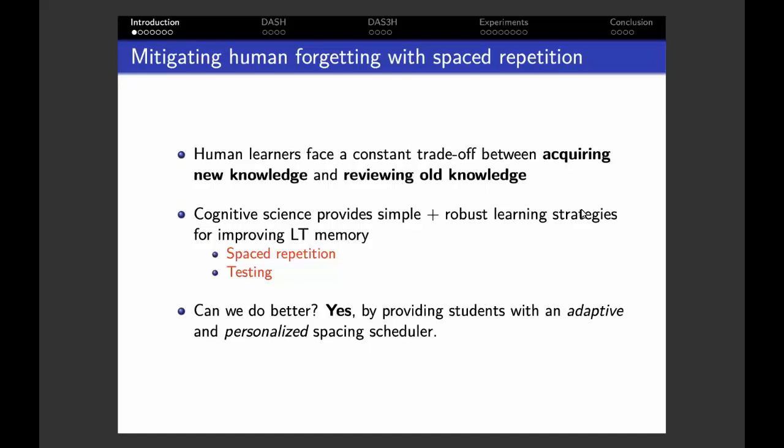Lucky for us, cognitive scientists have come up with simple yet robust learning strategies for improving long-term memory. For example, there's the spaced repetition strategy and the self-testing strategy. Spaced repetition consists in temporarily distributing learning sessions of a given piece of knowledge instead of spending the same time in a single big massed session. Self-testing consists in testing one's knowledge after learning instead of simply reading the same lesson again. Both strategies have been shown to improve memory retention on large learner populations.